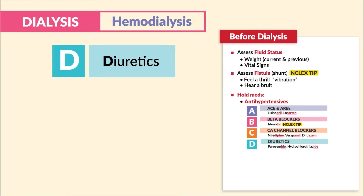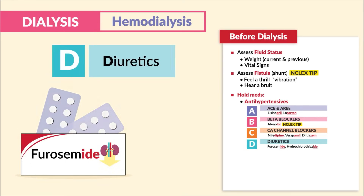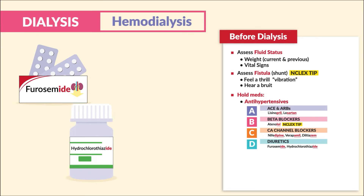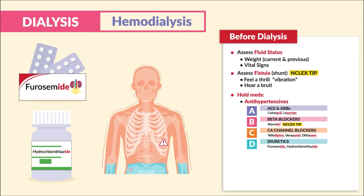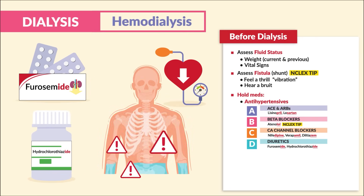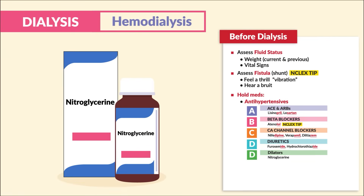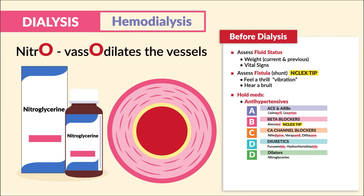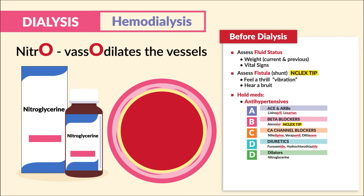The last two D's. D is for diuretics, ending in ide, like furosemide and hydrochlorothiazide. They end in ide, so the body is dried, and it lowers the blood pressure. The last D is for dilators, like nitroglycerin — just think nitro, vasodilates the vessels to make that BP low.